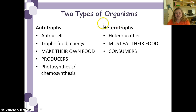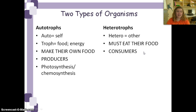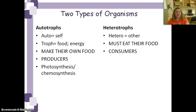Then we have heterotrophs. Hetero means other — these are things that have to eat their food. You and I are heterotrophs; we can't make our own food. Even if we go home and cook spaghetti tonight, we're still not making our own food — we are taking food that's already been made, or taking plants or other animals and cooking them up. We're called consumers.